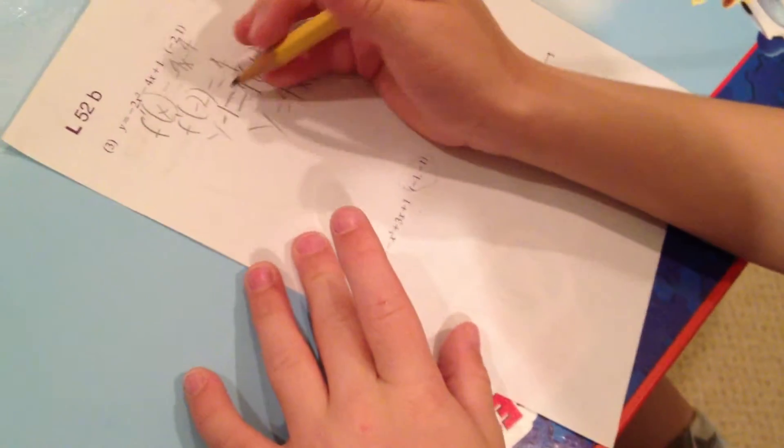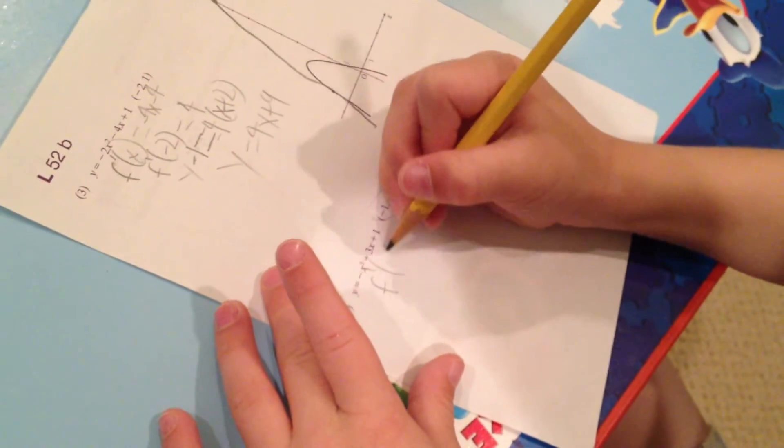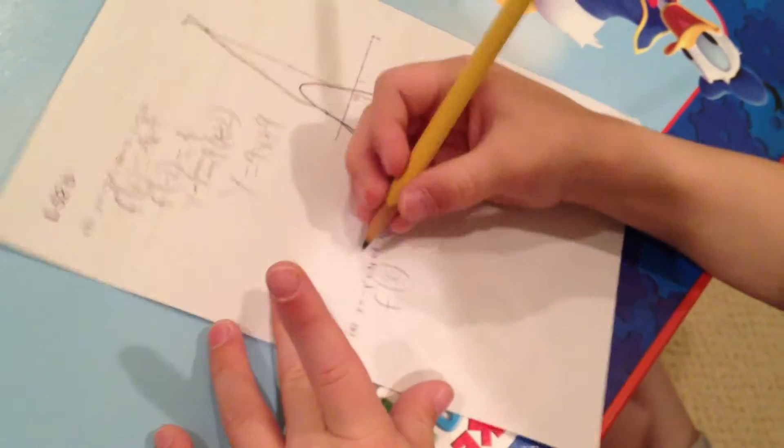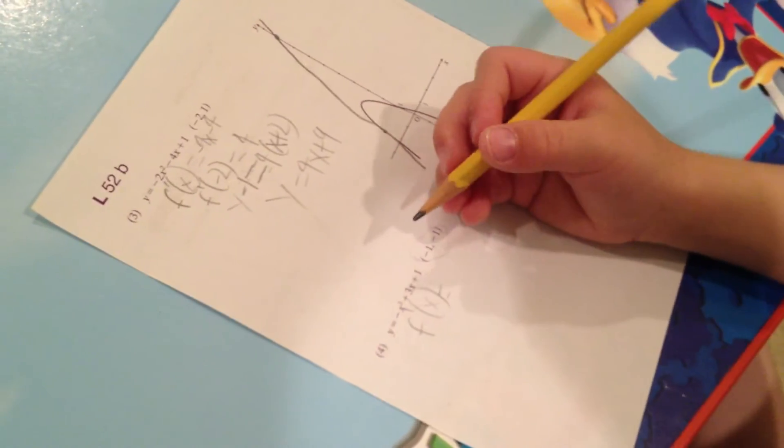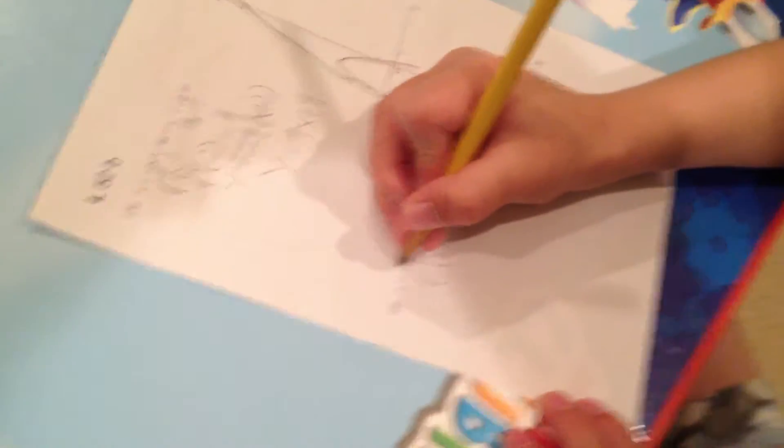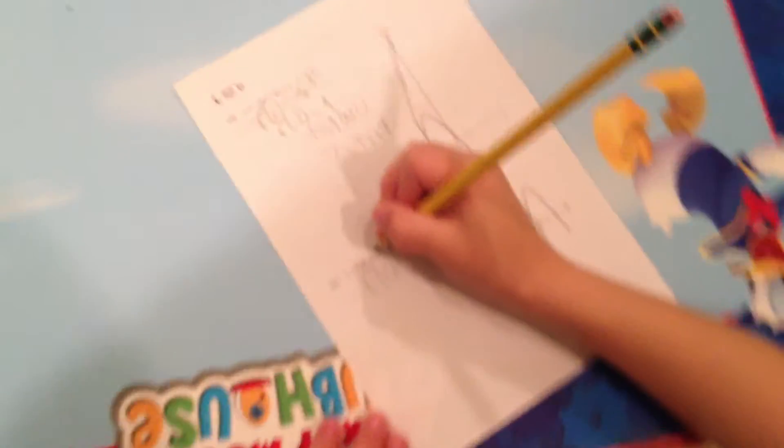First, just like on this problem, we're going to find f prime of x. And everyone knows that the slope is always the derivative. So f prime means derivative, so f prime of x is the derivative of this.